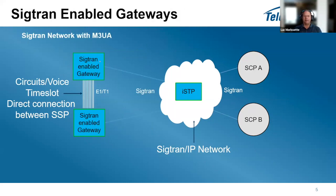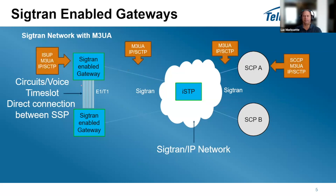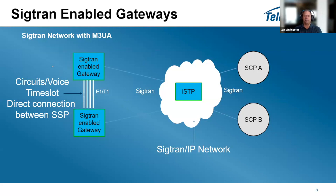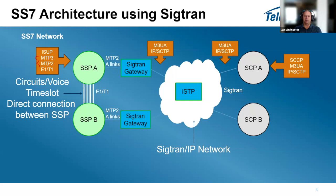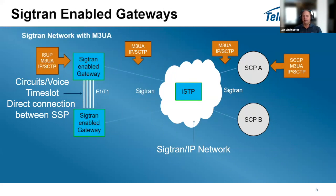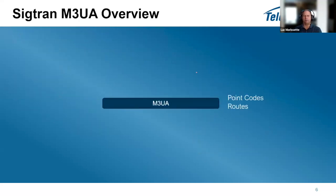You can also have a SIGTRAN-enabled gateway that connects directly to the SIGTRAN network, but the TDM lines carrying voice are still on E1/T1. Here your ISUP is directly connected to the M3UA layer instead of the older MTP3 and MTP2. M3UA sits right in the middle. You need to define point codes at the MTP3 and M3UA level, since these identify each element in an SS7 network.